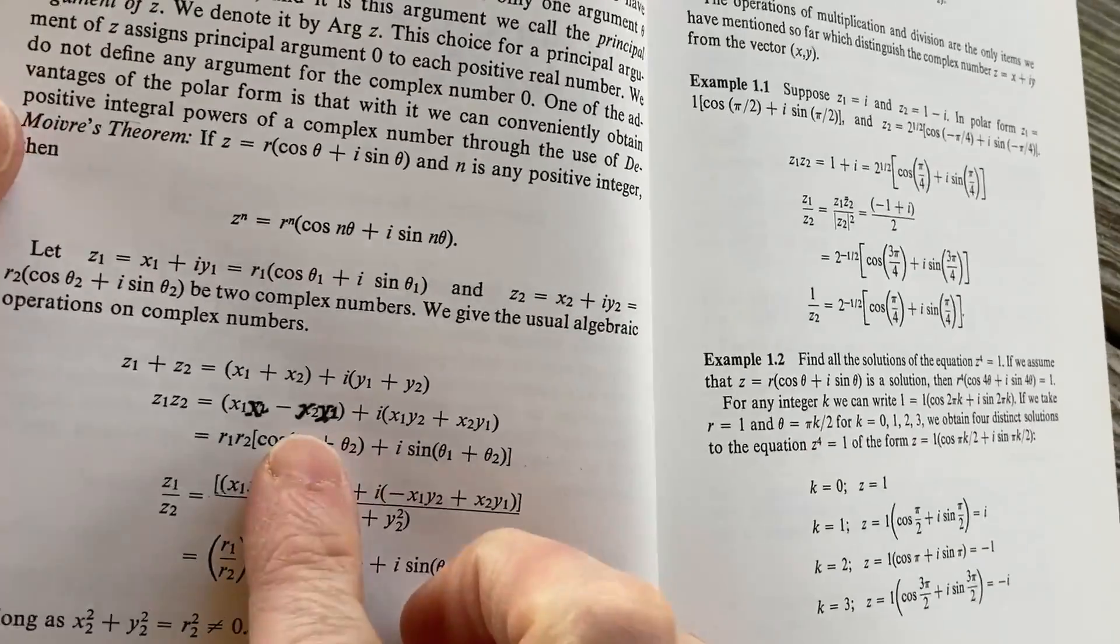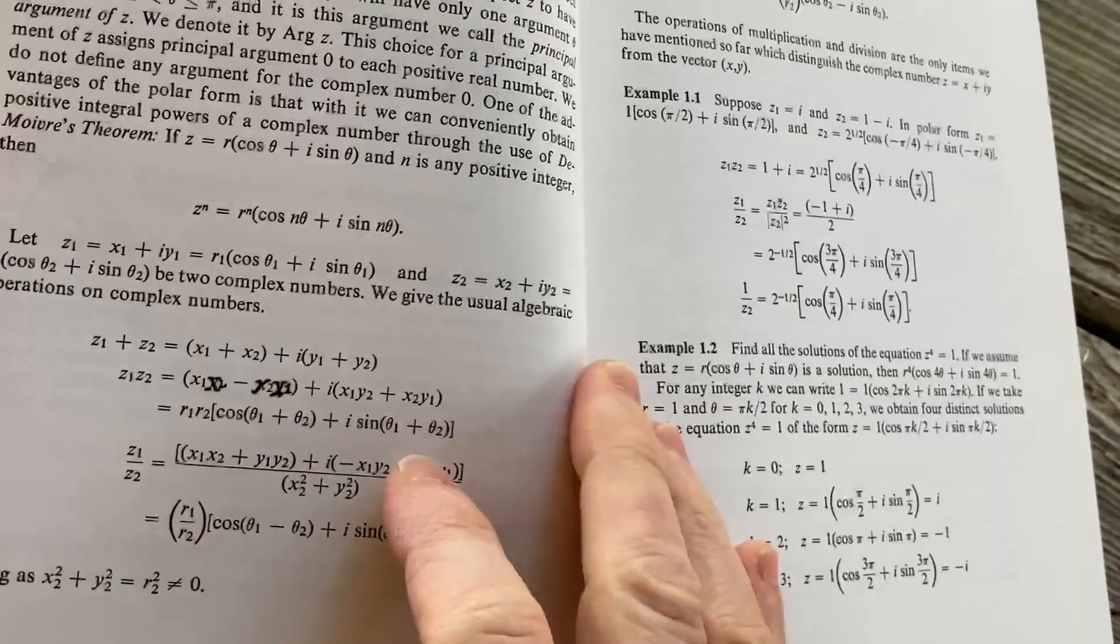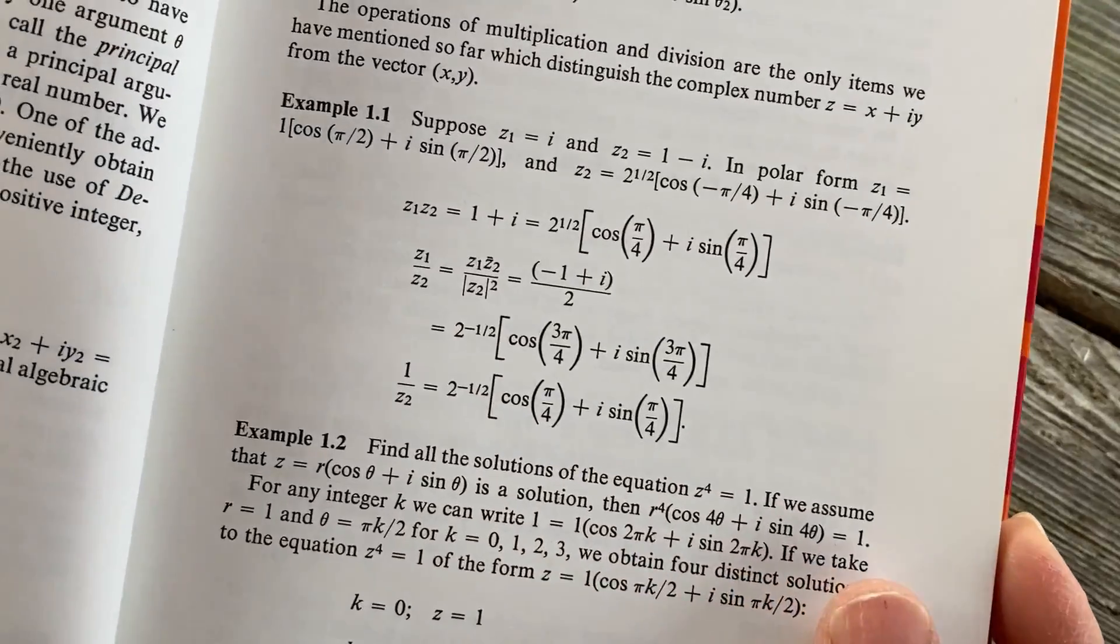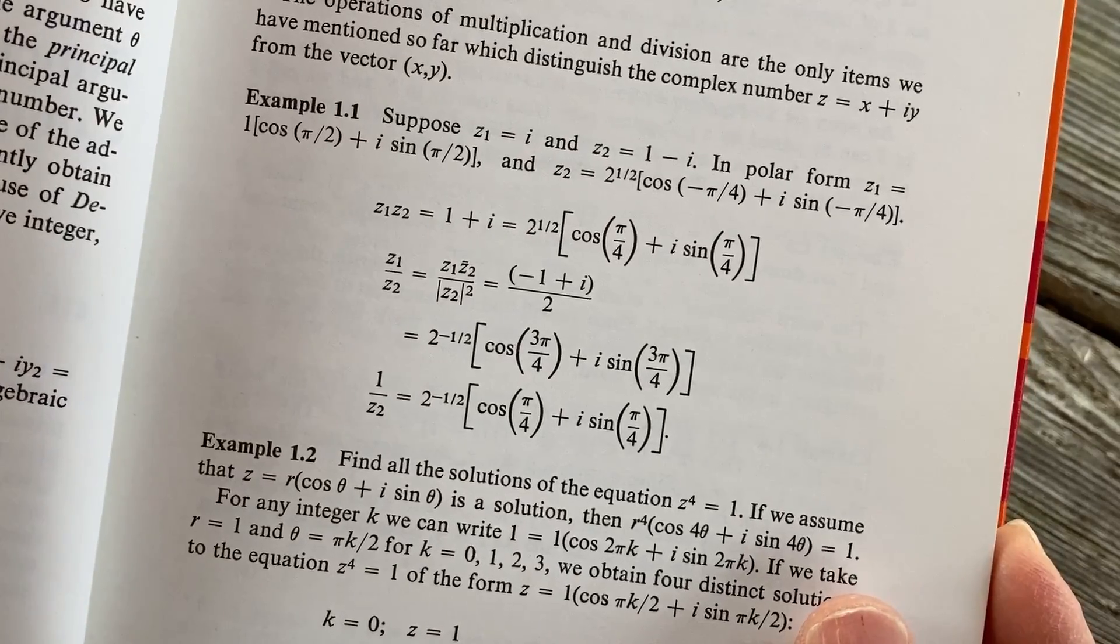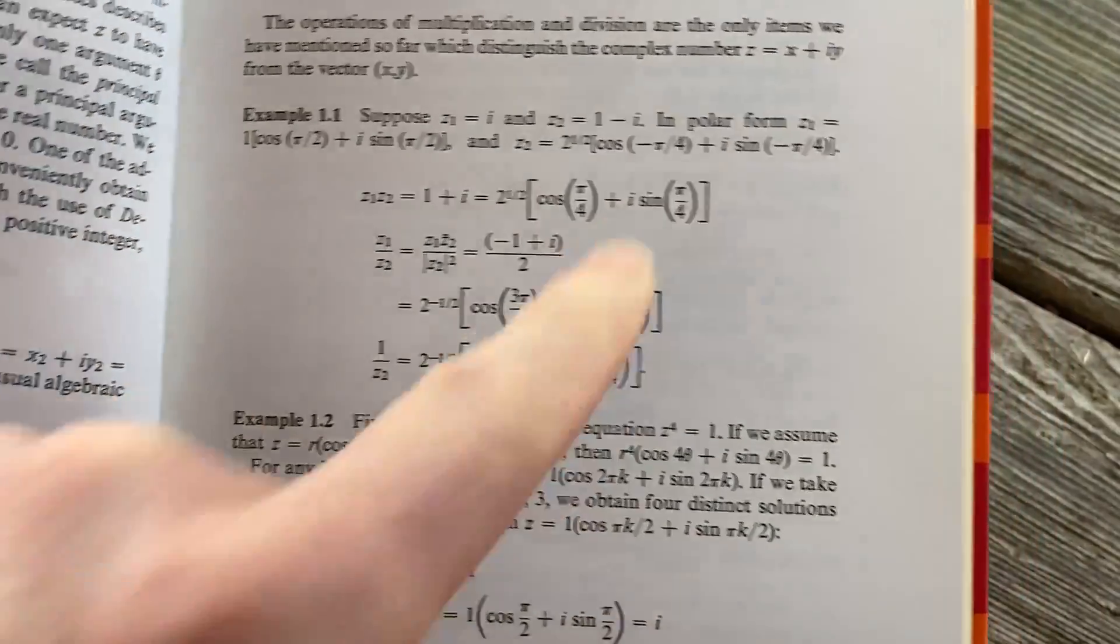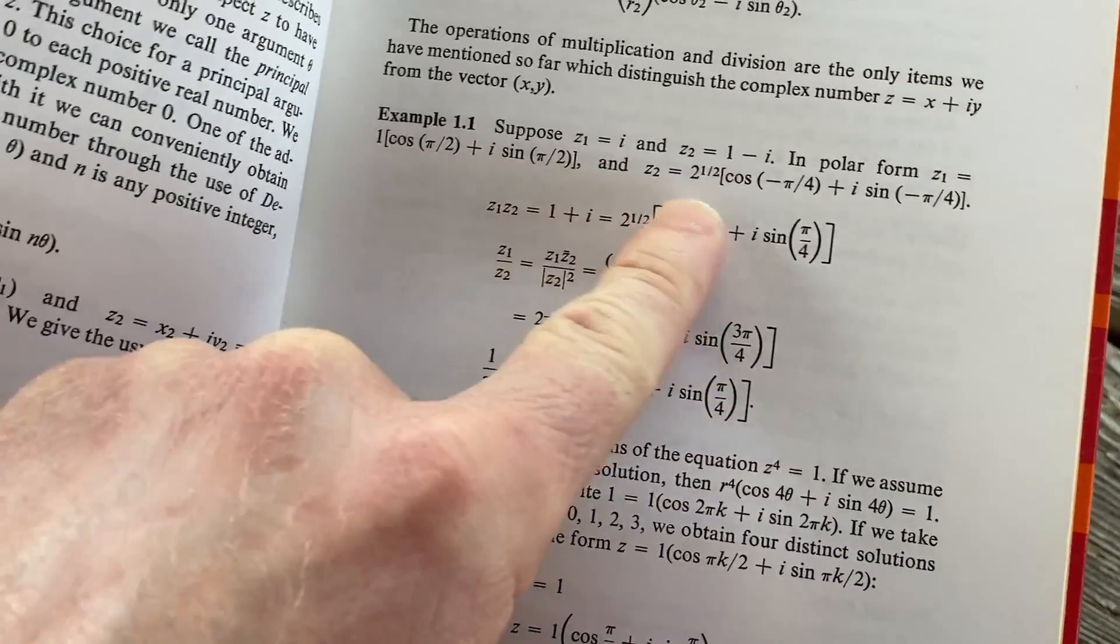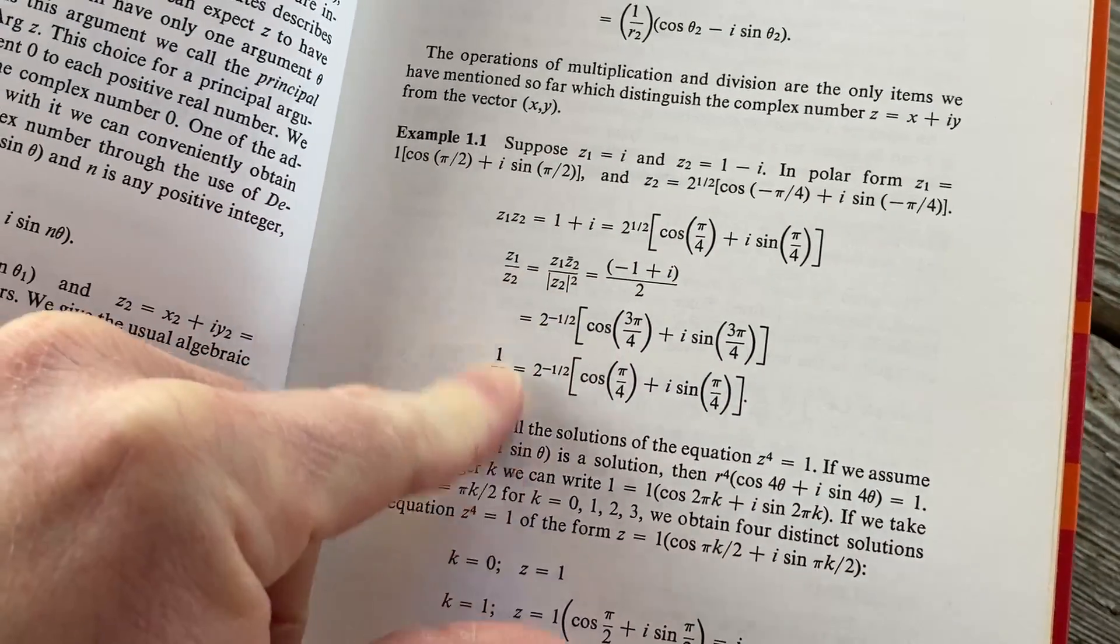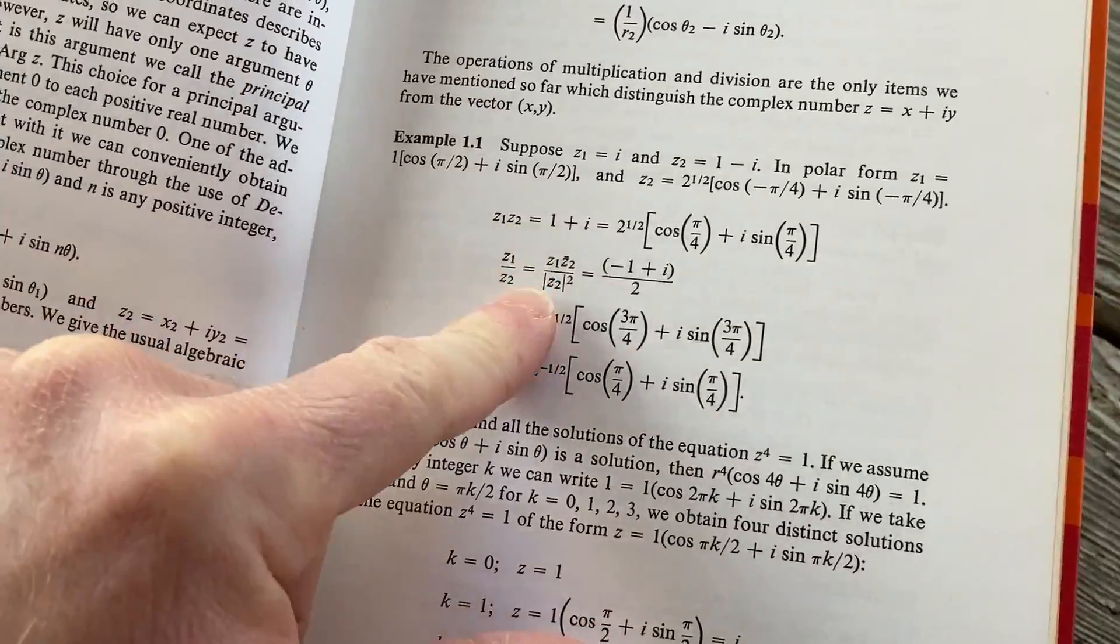So it looks like someone wrote in the book. Perhaps there was a typo and they fixed it. You can see here there's an example. Suppose z sub 1 is equal to i, z sub 2 was 1 minus i. And you can see they just go straight to polar form. They don't even explain how they did it. They just go straight to it and they multiply them. So it's pretty hardcore.